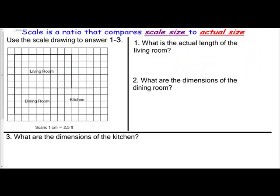Now they're saying, what are the dimensions of the living room? Dimensions means the length and the width. It says the dimensions of the dining room — so here's one side of the dining room, here's the other side, here's the other side, and here's the other side. So let's find out what the length is: one, two, three, four, five, six — so it is six centimeters. And one, two, three, four — four centimeters.